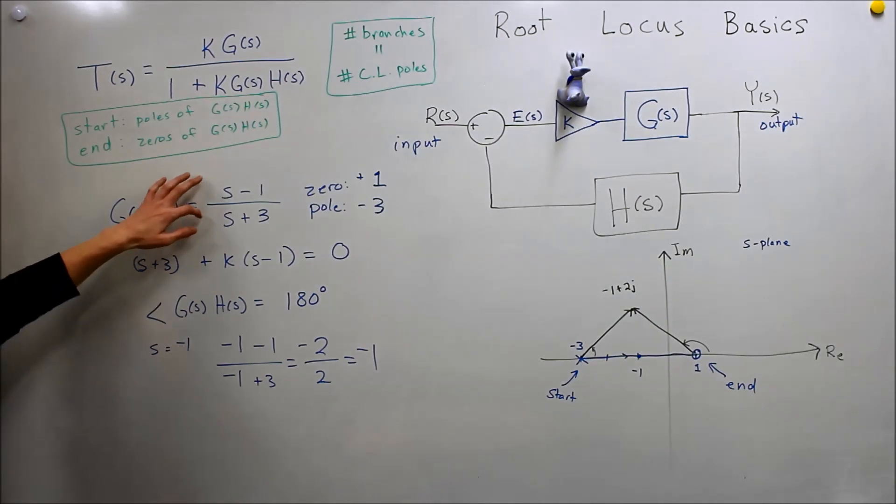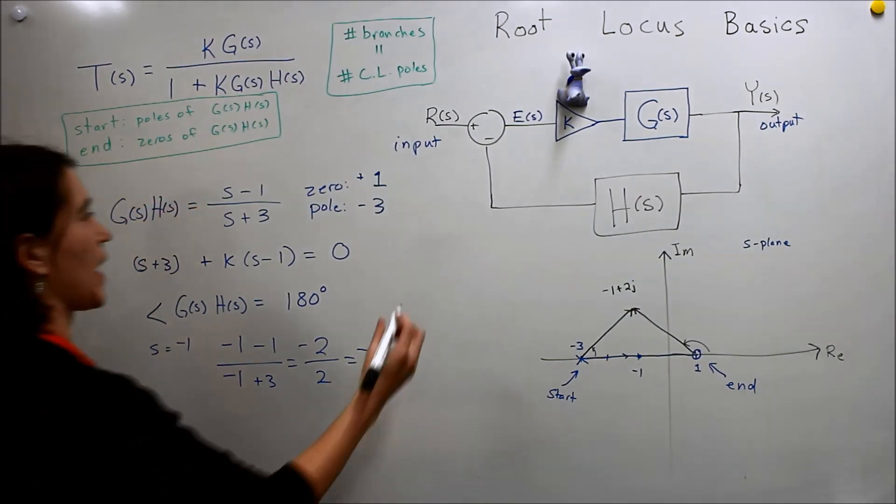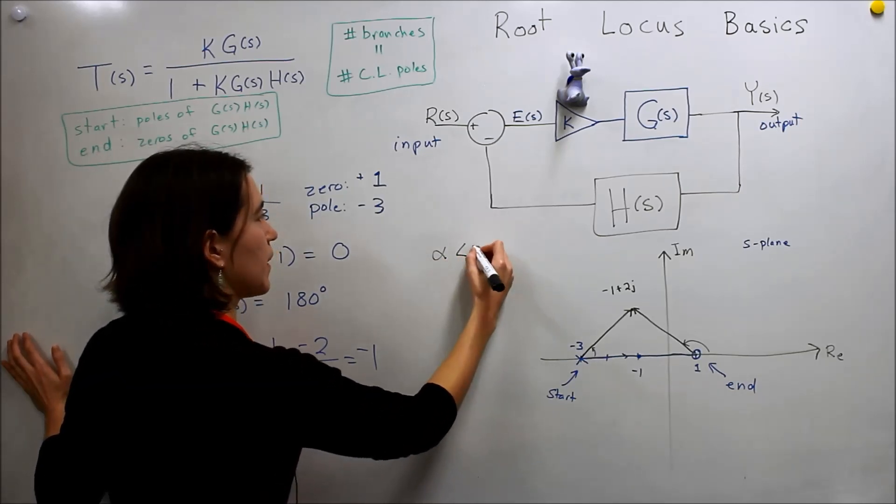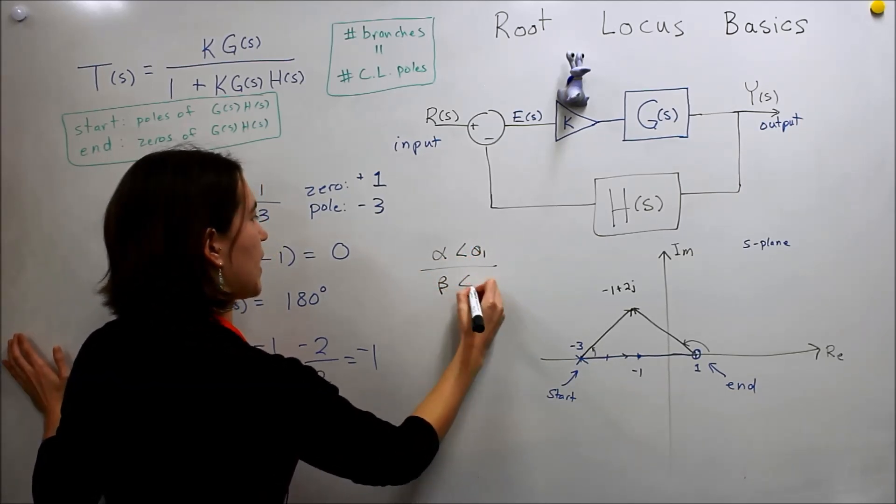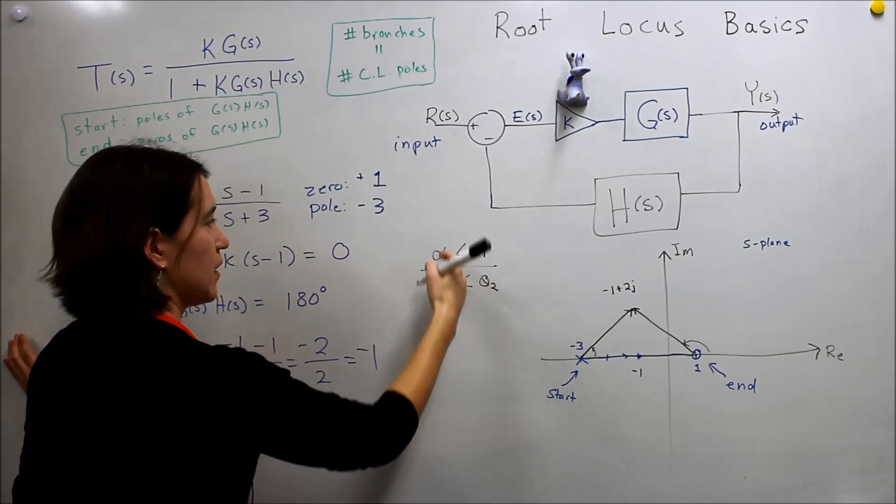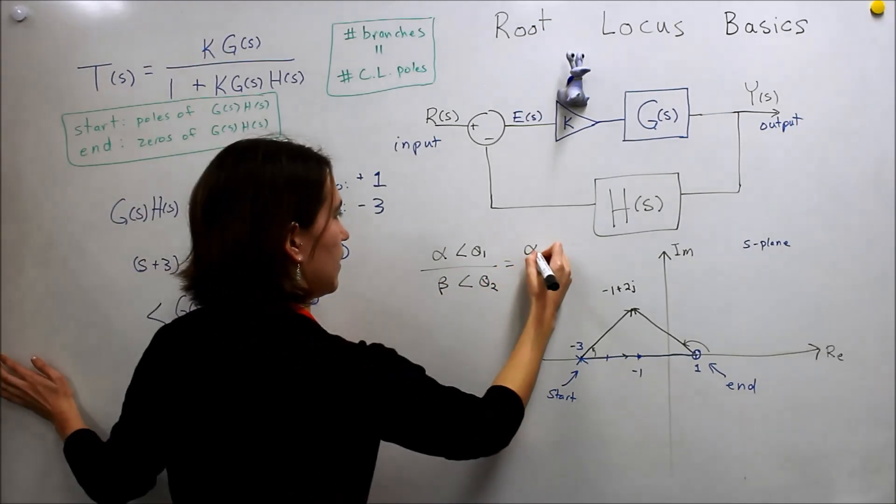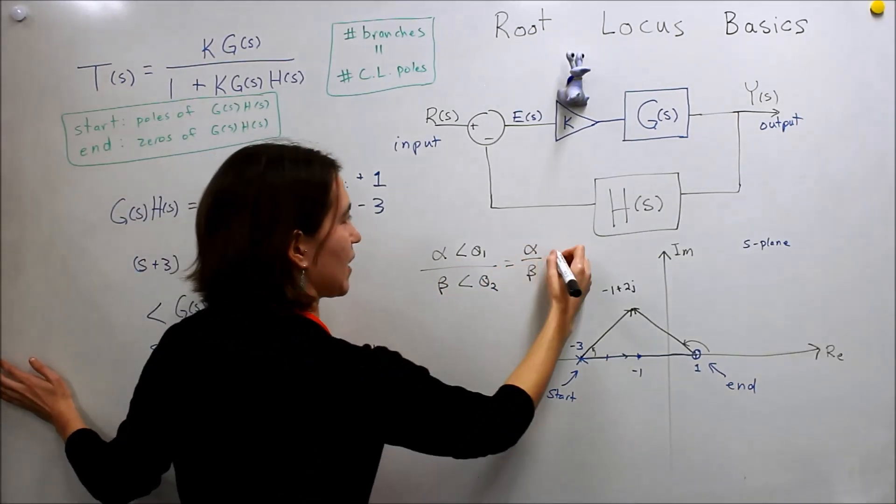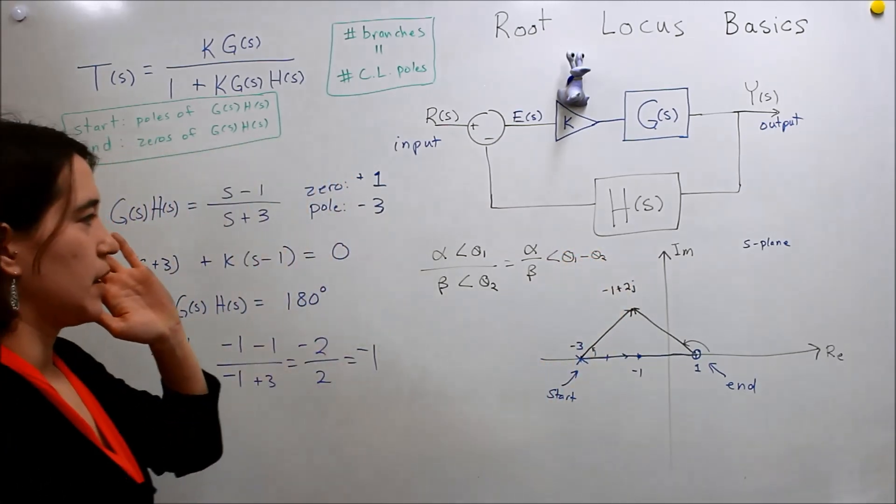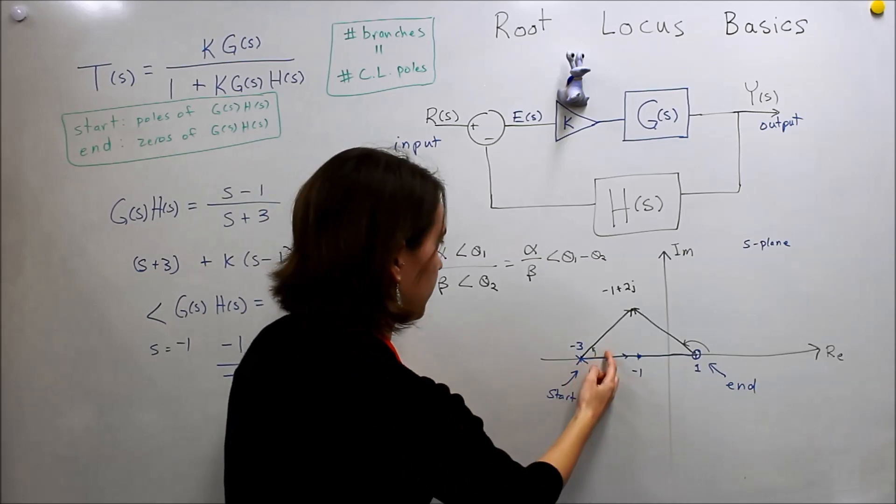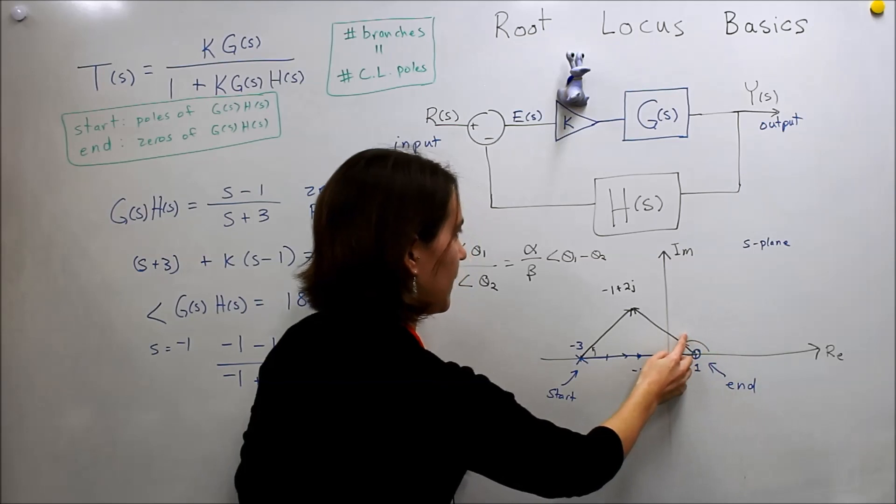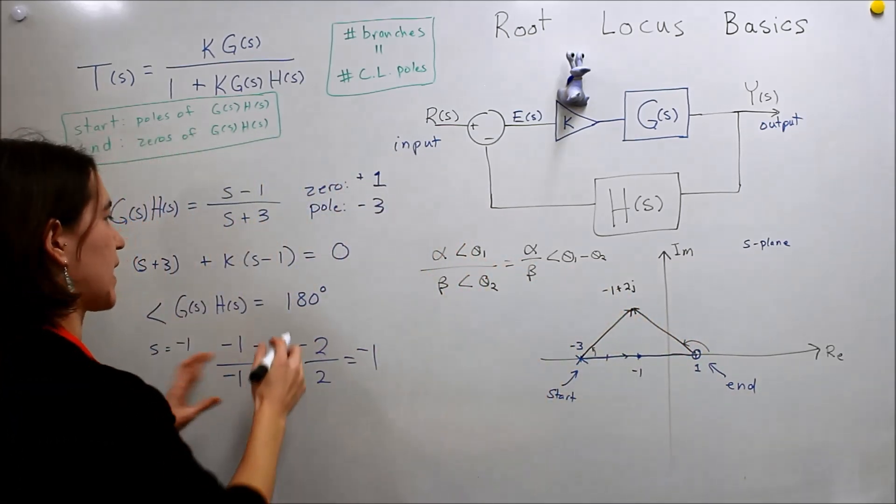And when we, if we wanted to divide two values, so say we have alpha and some angle theta 1, and we have a beta and some angle theta 2, if we want to evaluate these, we would get alpha over beta, and we actually end up subtracting the angles, theta 1 minus theta 2. So if we look at this value, we have this value, and we subtract this value, in order for the angles to work out, it has to be exactly 180.